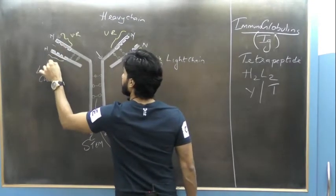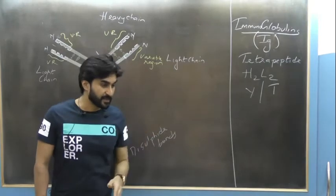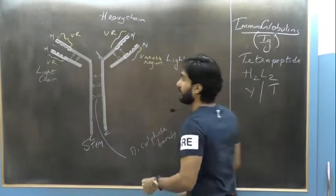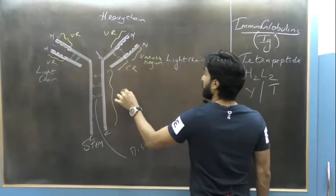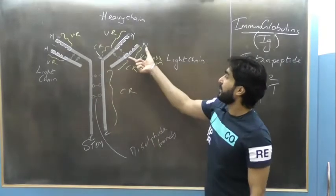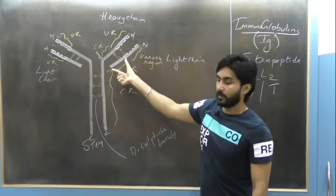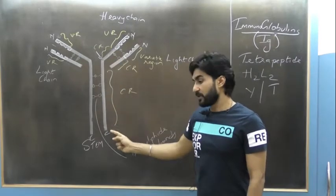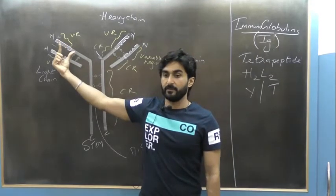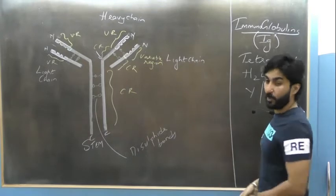Both the heavy chain and light chain have variable regions. The rest of the antibody, which is the same in all antibodies, is called the constant region. So we distinguish: variable region of light chain, constant region of light chain, variable region of heavy chain, and constant region of heavy chain. The stem of the antibody molecule is formed by the constant region of the heavy chain.